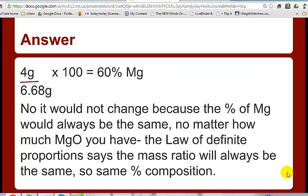Well, to find the percent magnesium, we would take the amount of magnesium, 4 grams, over the total mass of our compound, MgO, 6.68, comes out to be 60% magnesium.